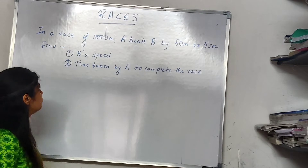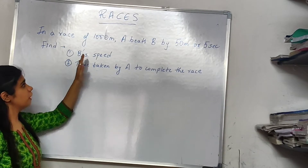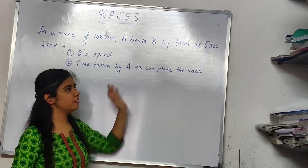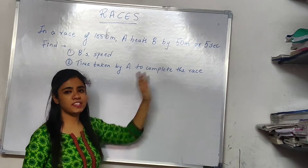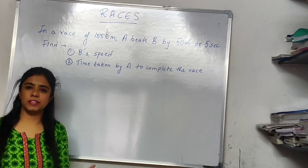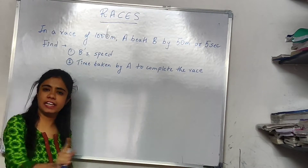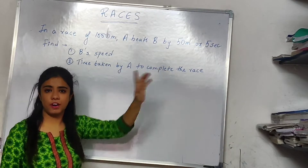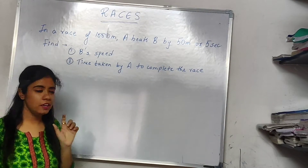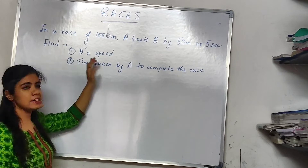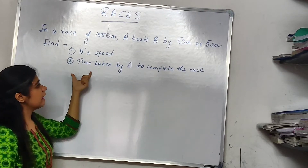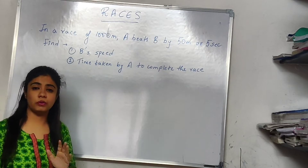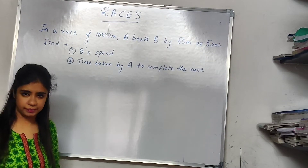Now, what is the question? In a race of 1000 meters, A beats B by 50 meters or 5 seconds. So it's a 1000 meter race on a linear track. A beats B by 50 meters or 5 seconds. The question is: find B's speed and the time taken by A to complete the race.